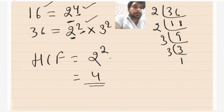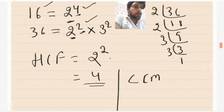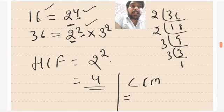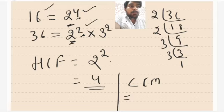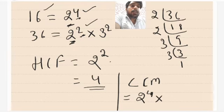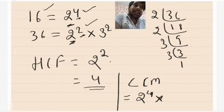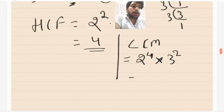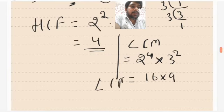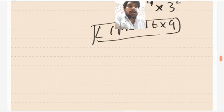Now how to find out the LCM. In LCM, you take all the common prime factors with their highest power, and then multiply by all the remaining prime factors with whatever power they have. The common prime factor is 2, and we take it with the highest power: 2 raised to the power 4. Then we multiply by the remaining prime factor, which is 3 raised to the power 2. So LCM = 2⁴ × 3² = 16 × 9 = 144.